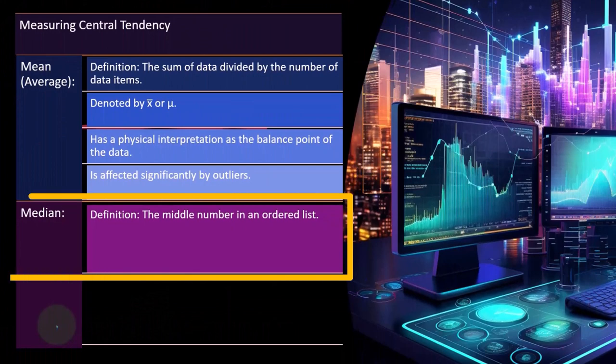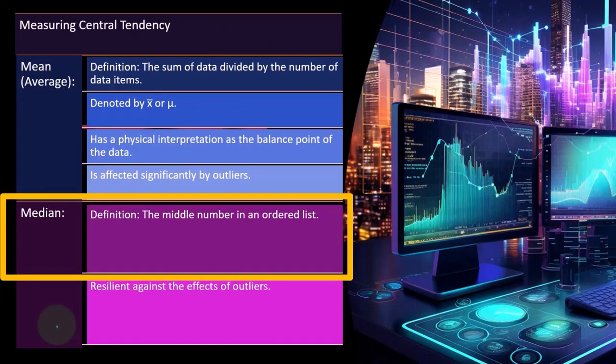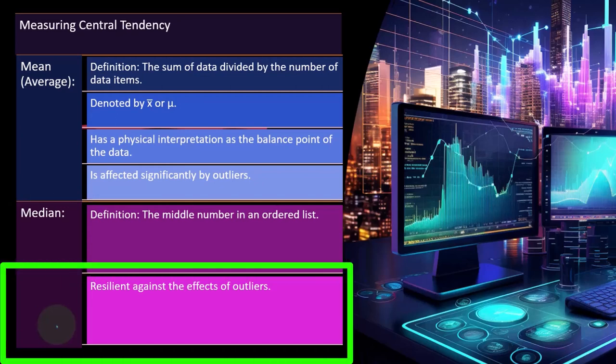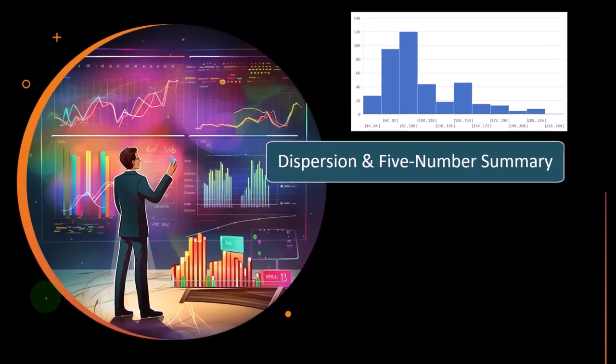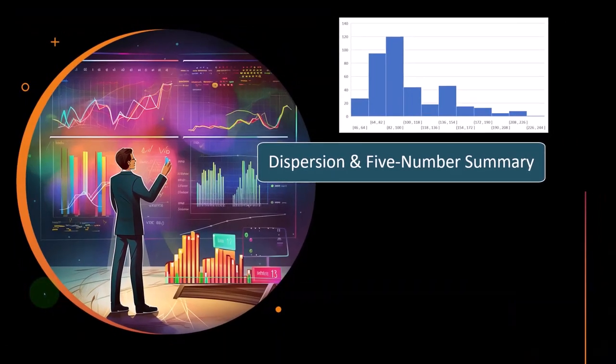The median is the middle number in an ordered list — list the numbers from smallest to highest and pick the one in the middle. The median is resilient against the effects of outliers; a large outlier won't have a big impact on the median the way it would on the mean or average.